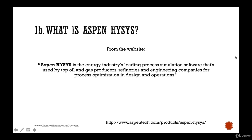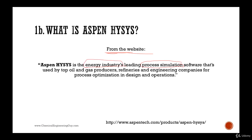So maybe you're wondering what is Aspen HYSYS. It's nothing more than a process simulation. I took this from the website and I really like it because it's entirely true. Aspen HYSYS is the energy industry's leading process simulation software — it's in charge of process simulating the energy industry, which is oil and gas, petrochemical mostly, and one of the most powerful software still being used by oil and gas producers, refineries, and engineering companies for process optimization in design and operations.